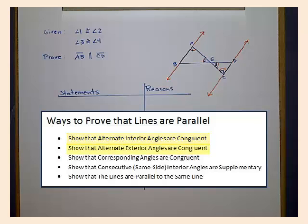You can show that the alternate exterior angles formed by a transversal are congruent, that consecutive or same-side interior angles are supplementary, or that corresponding angles are congruent.